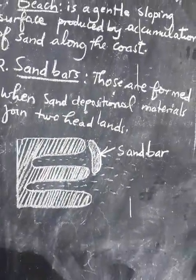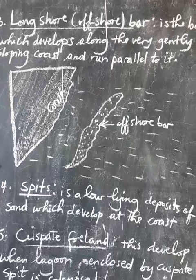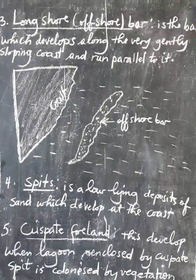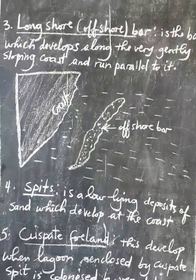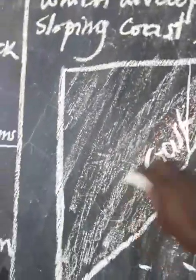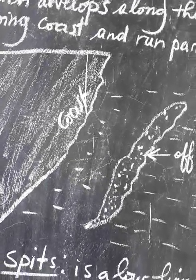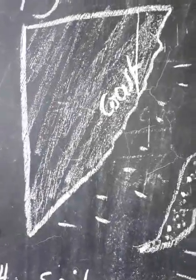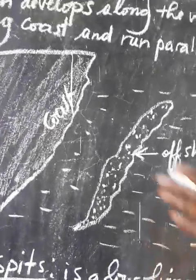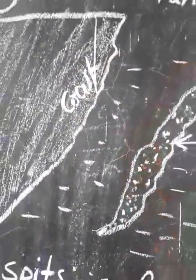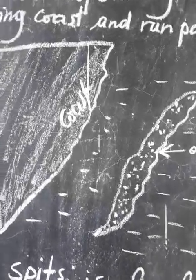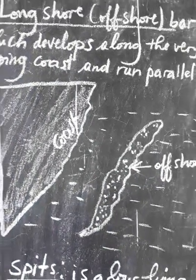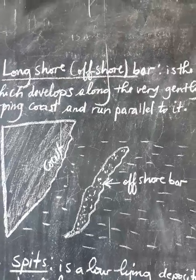Feature number three is a longshore bar or offshore bar. An offshore bar is a bar which develops along a very gentle sloping coast and runs parallel to it. A wave brings materials and deposits them parallel to the coast, and those depositional materials lead to the formation of a gentle sloping ridge. Such a feature is called a longshore bar or offshore bar.